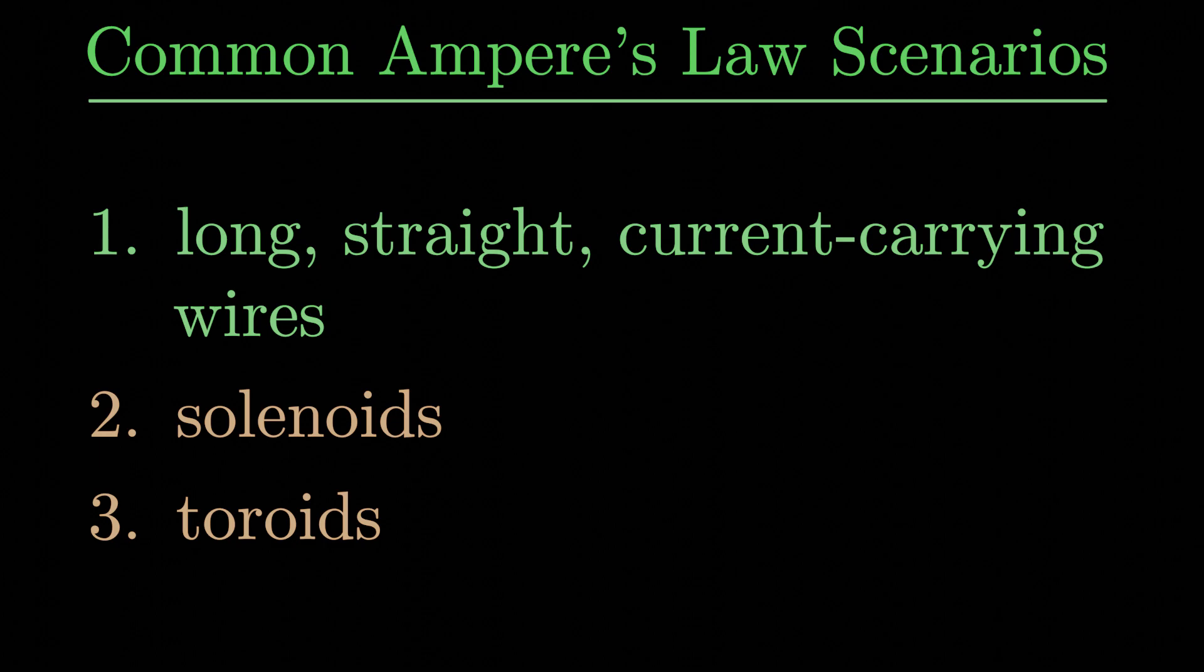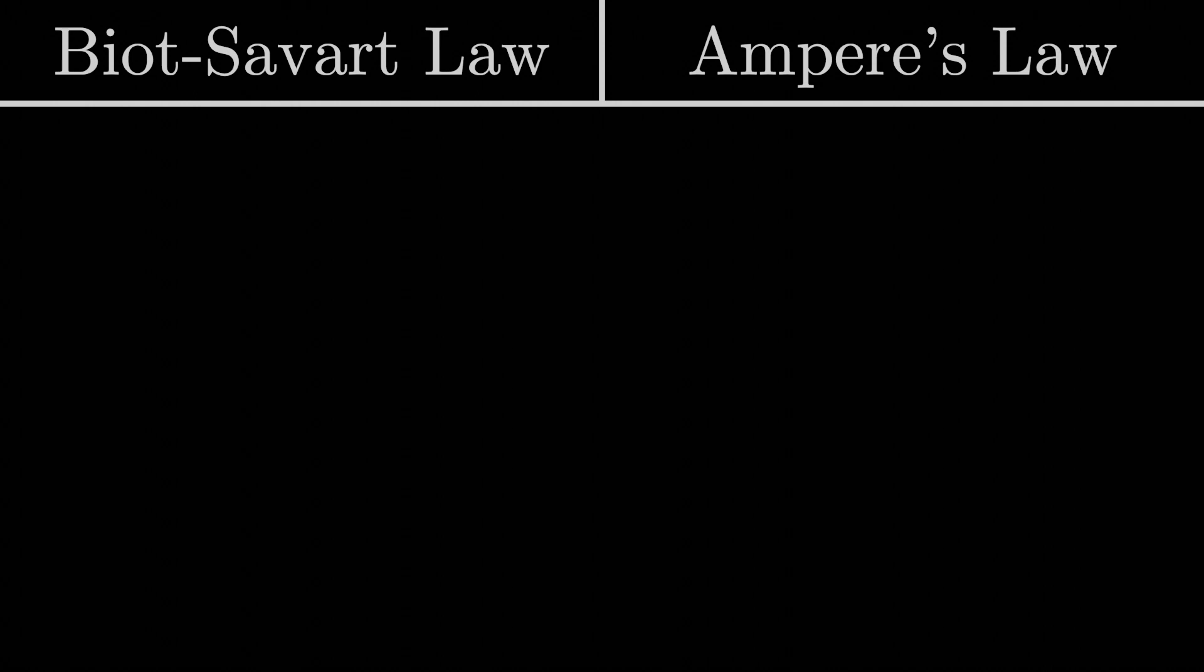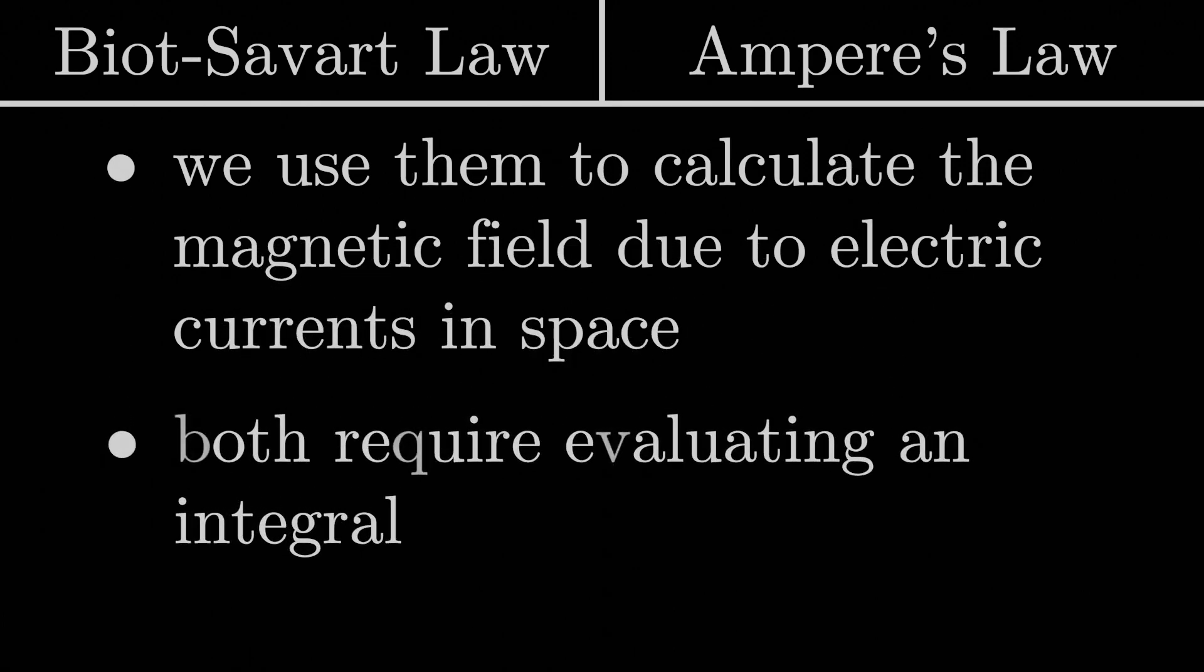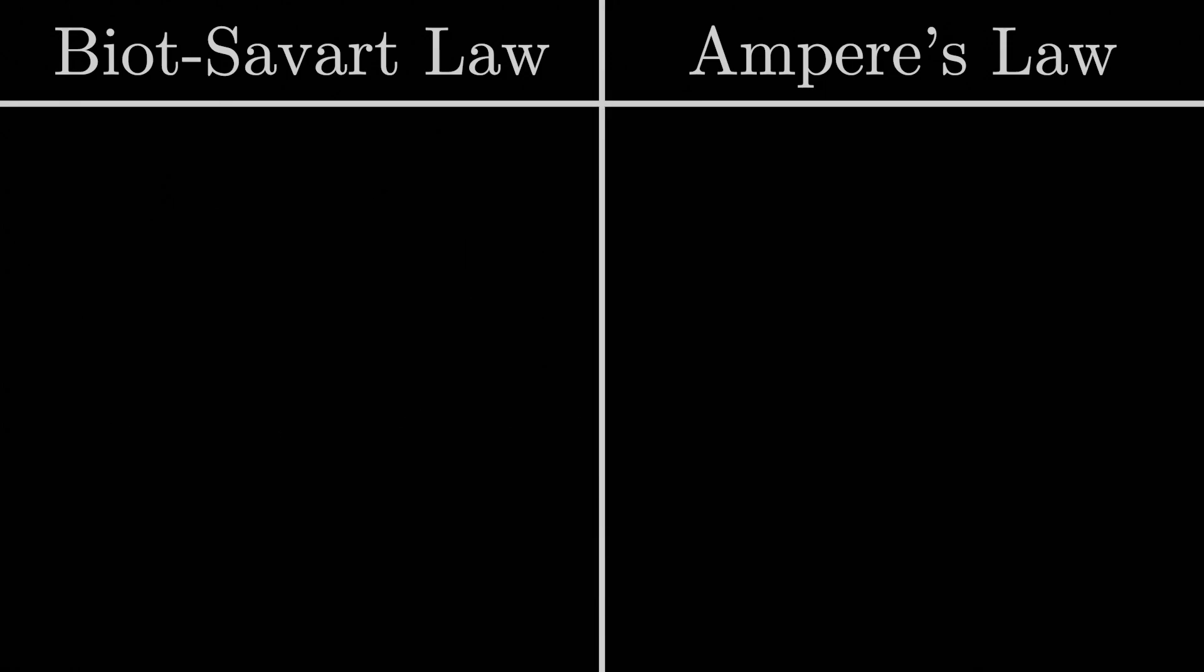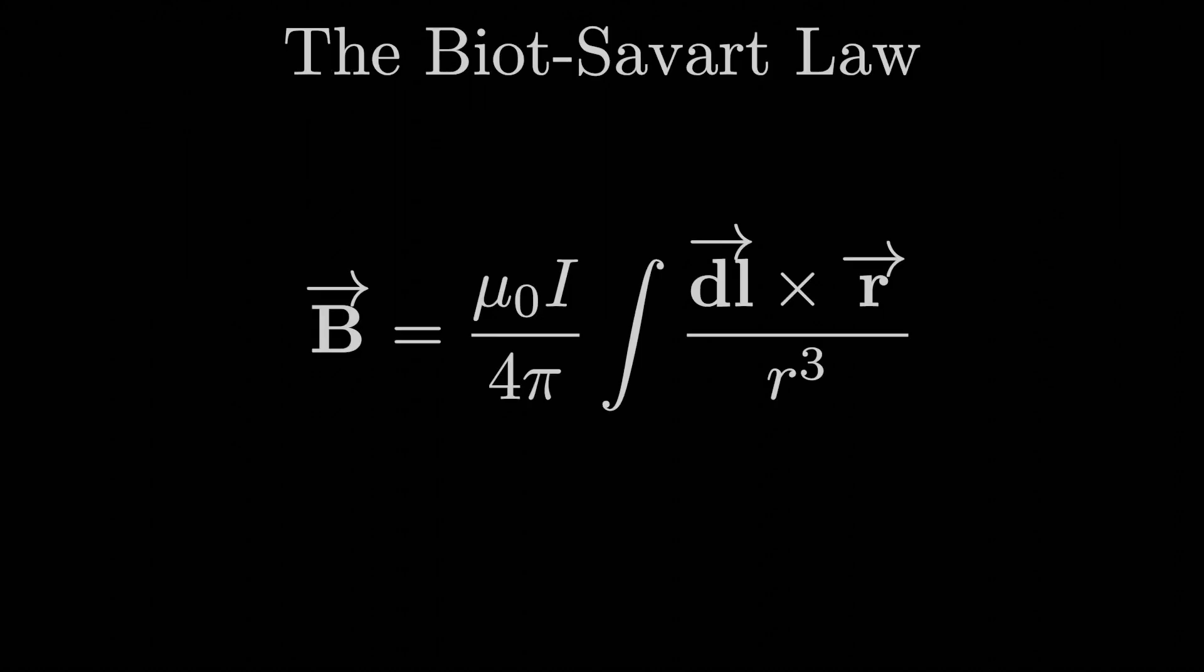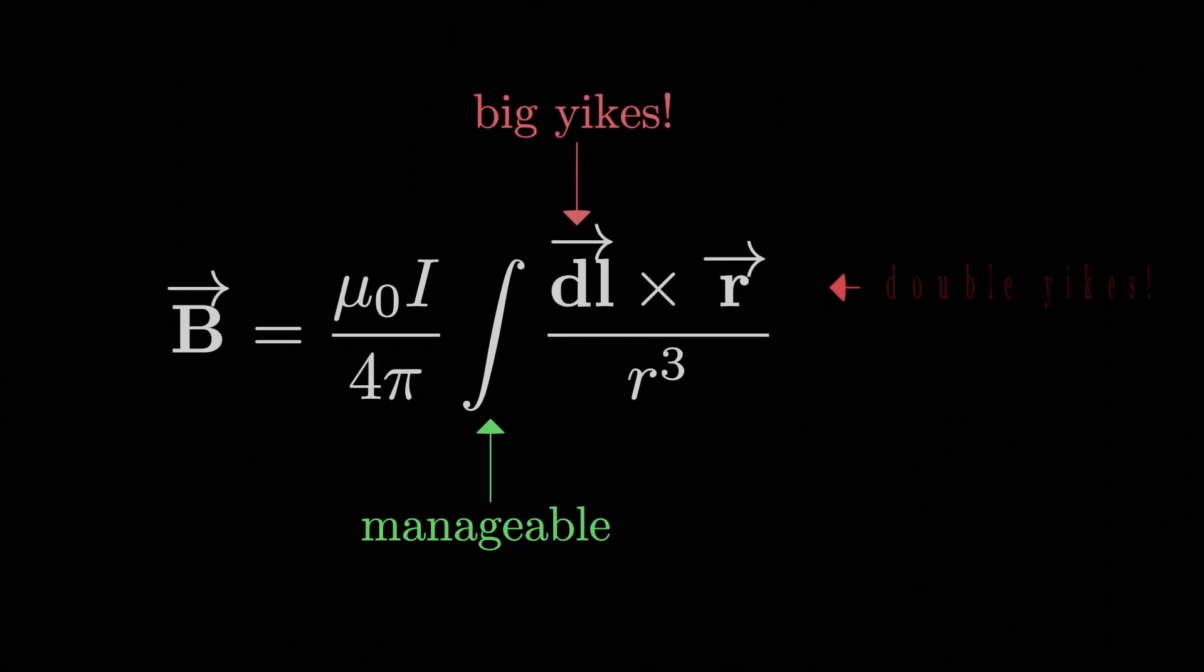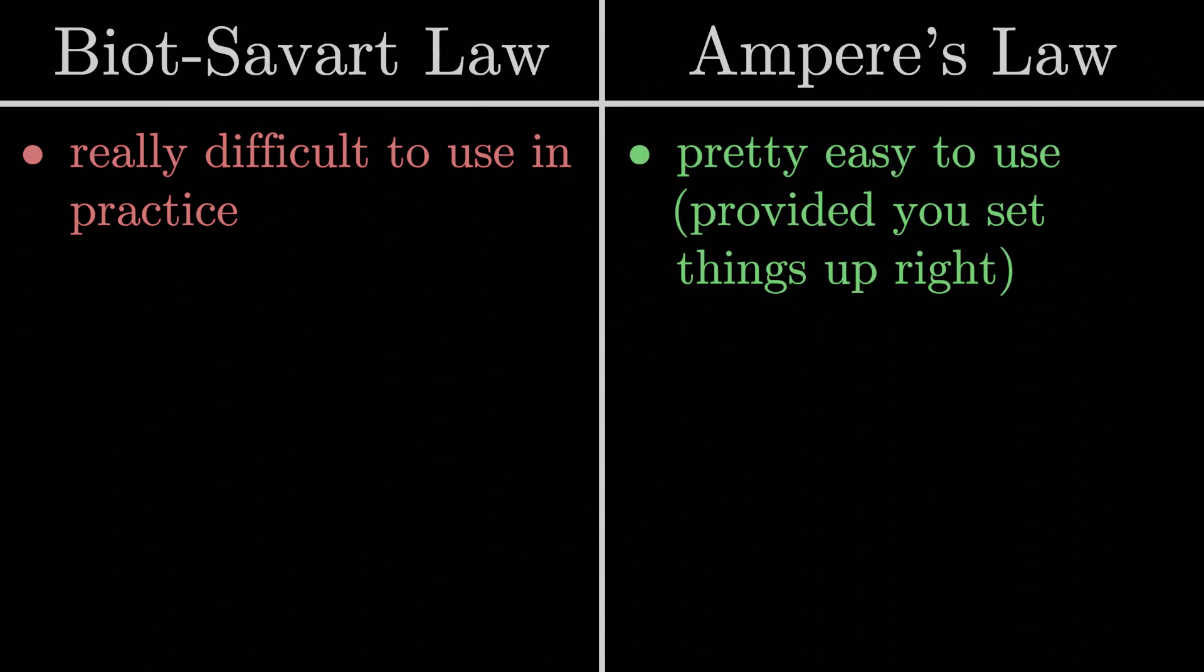The last thing I'd like to do is compare the Biot-Savart law with Ampere's law. On some level, they're both very similar in the sense that we use them to calculate the magnetic field at a certain point due to electric currents in space, and both involve performing an integral. But there are certainly some differences between them as well. In the case of the Biot-Savart law, using it in practice is actually really difficult, as we saw in the previous lesson. Don't worry, it's not just you. It really is difficult to make use of the Biot-Savart law, because it involves such a complicated integral involving not a scalar, but a vector differential that's then crossed with another vector, and that's also not constant, so any solution process usually turns into a hairy mess.